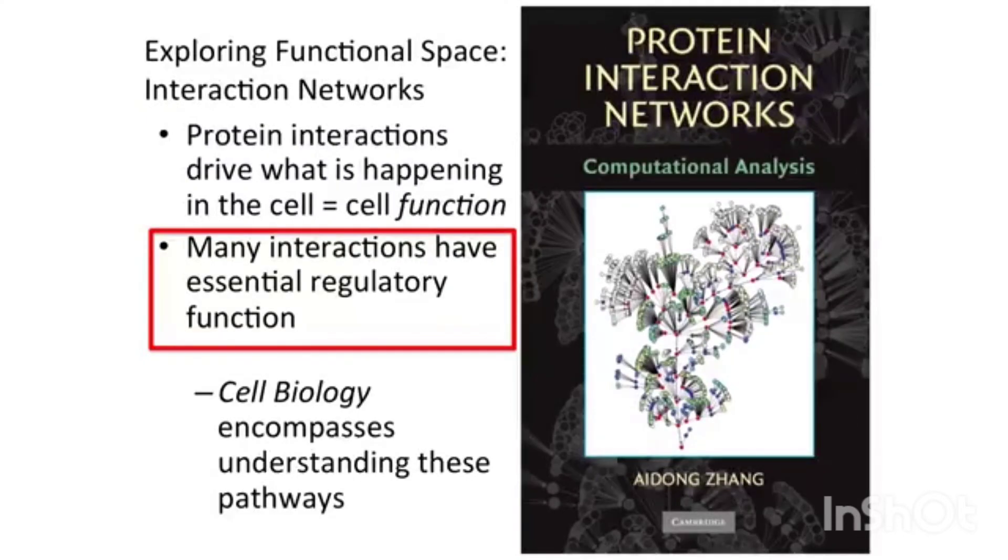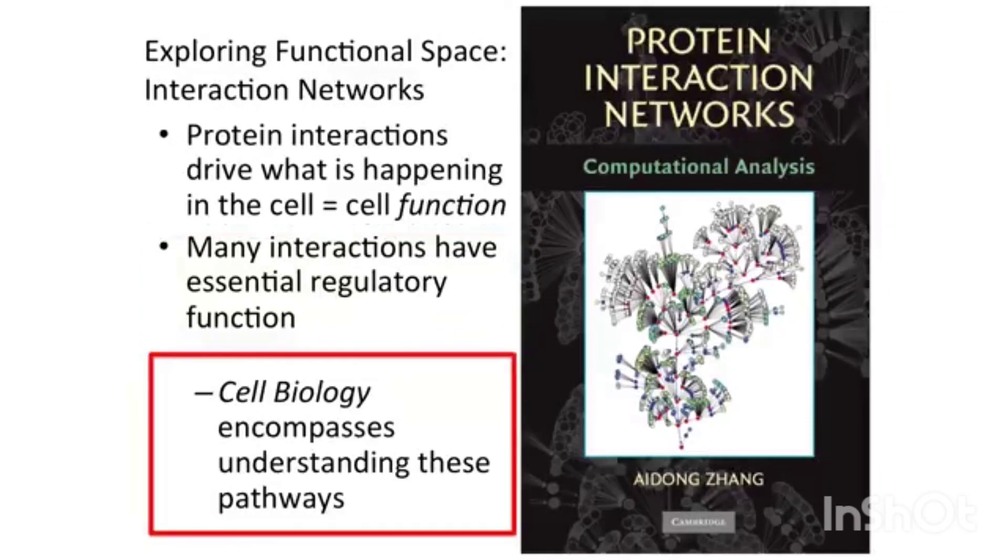A very significant number of these interactions have a regulatory function in the cell. They do something that either activates or inhibits another protein's activity. Finding where your protein is in this interaction space is also part of characterization. Understanding what other things it interacts with. If it's in a family of proteins that you've identified and you know this other protein has these interactions and you establish that yours has one of those but not the other, it will tell you something about what it does in the cell. Ultimately, cell biology encompasses understanding these pathways in terms of individual protein function.